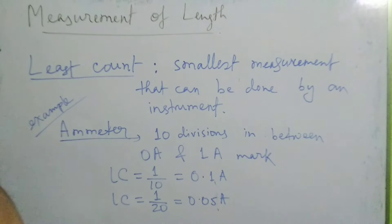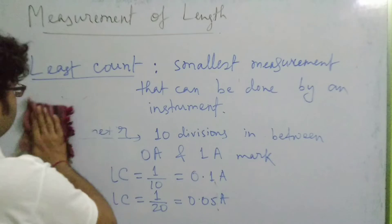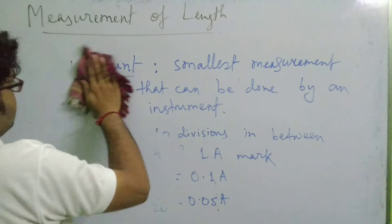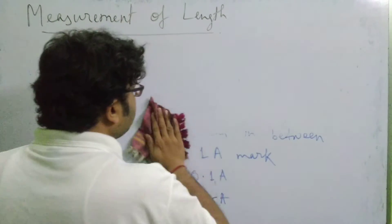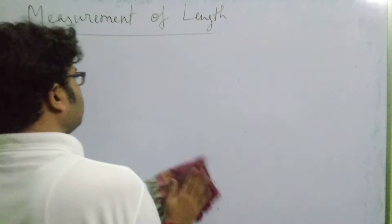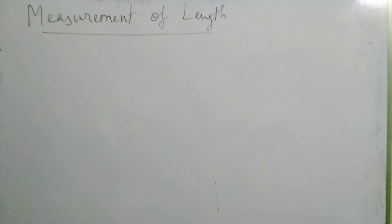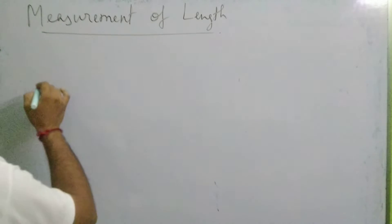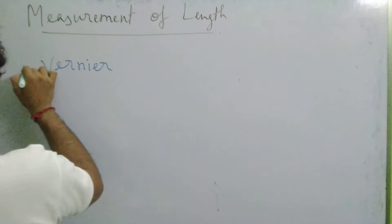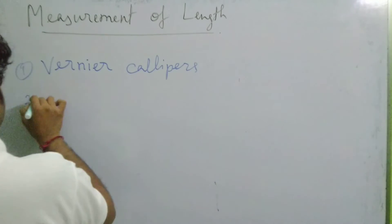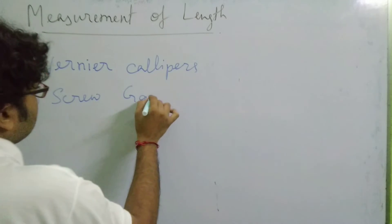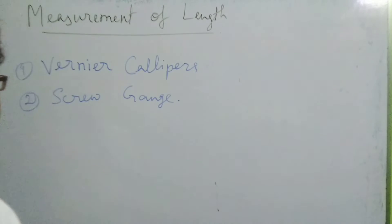As we have been discussing, while measuring length with regular instruments the least count can be 0.1 centimeter or 1 millimeter. So if I want to measure lengths smaller than 1 millimeter or 0.1 centimeter, there are some special devices. There are actually two special devices: one is called the Vernier Calipers and the second one is the Screw Gauge. These are the two instruments generally used for measuring very small lengths.